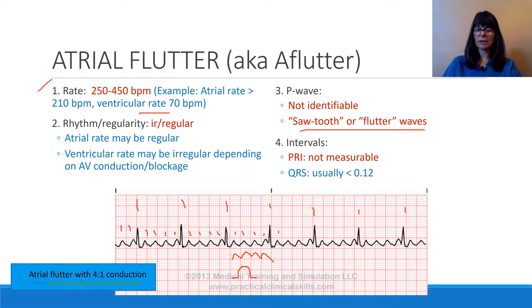We have about 15 beats on this three-second strip, which would give us 28 in a six-second strip — meaning the atrial rate is 280. Because this irritable focus comes from the atria and not the SA node, the ventricles don't respond to every impulse, so the ventricular rate is still normal at 70. This produces the sawtooth or flutter waves so typical of atrial flutter.